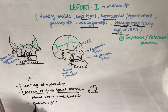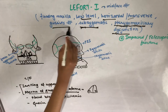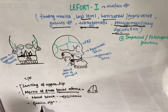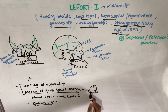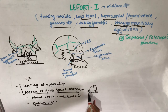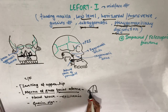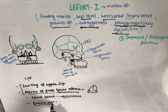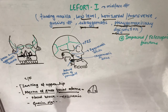The next sign is Guerin's sign, which is ecchymosis near the greater palatine foramen area, present bilaterally. This ecchymosis in the palatal area near the greater palatine foramen is the classical finding of Le Fort 1, which is why it is also known as Guerin's fracture.